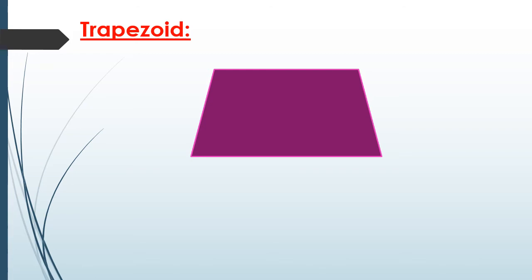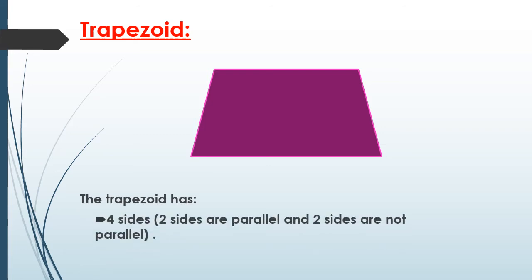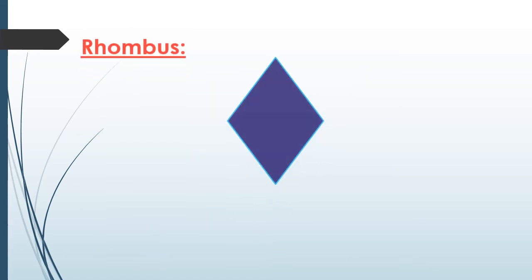Who can tell me what the name of this shape? It's a new one called trapezoid. The trapezoid has four sides — two sides are parallel and two sides are not parallel. What does the word parallel mean? If you extend two lines they will never meet at one point. And it has four vertices.